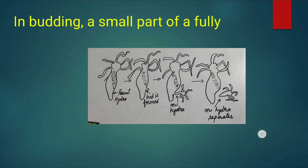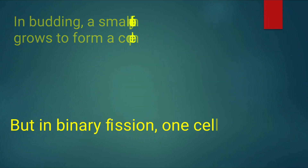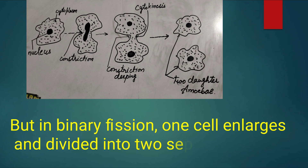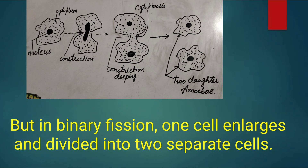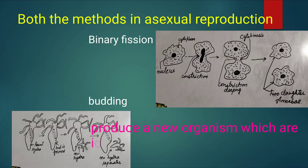In budding, a small part of a fully formed cell grows to form a complete cell. But in binary fission, one cell enlarges and divides into two separate cells. Both methods of asexual reproduction — binary fission and budding — produce new organisms that are identical to their parents.